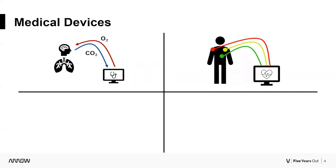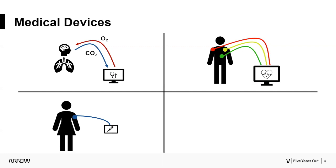ECGs can also be taken by wearables like watches. There's now single-lead ECG technology appearing in newer Apple Watches that gives a low-grade view of heart pulses. Many of those, for liability reasons, say don't use this as the final word. But it's really interesting to see how a technology used mostly in traditional hospital settings is becoming more embedded in daily technology — a trend I think you'll continue to see over the next few years.